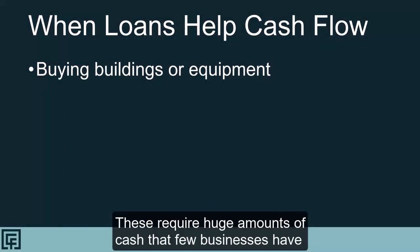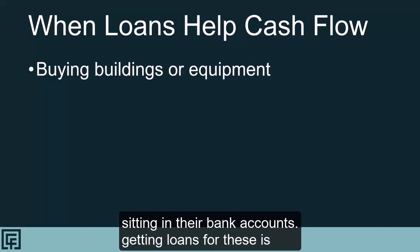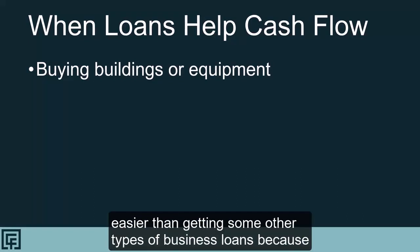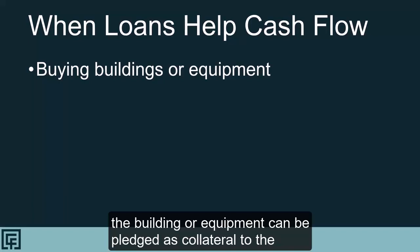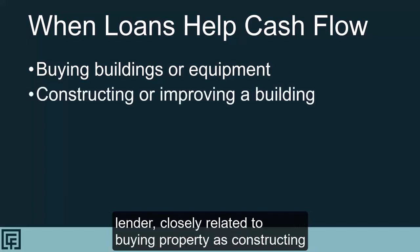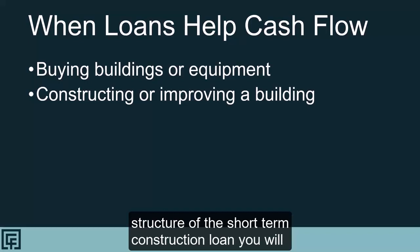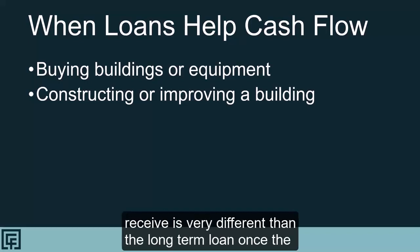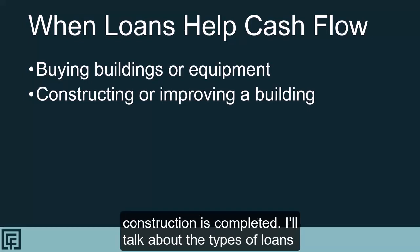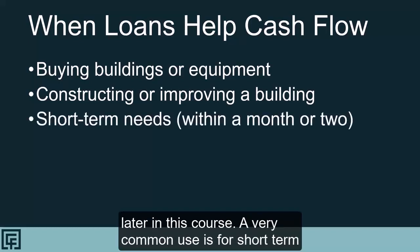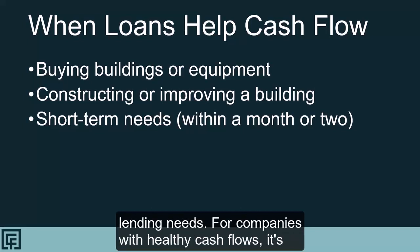One of the most obvious times to get a loan is when you are buying buildings or equipment. These require huge amounts of cash that few businesses have sitting in their bank accounts. Getting loans for these is easier than some other types because the building or equipment can be pledged as collateral to the lender. Closely related is constructing or improving a building. During the construction phase, the structure of the short-term construction loan is very different than the long-term loan once construction is completed.